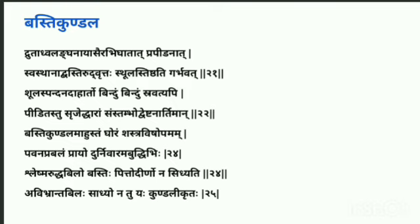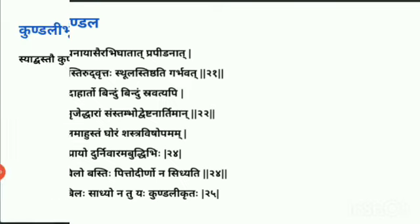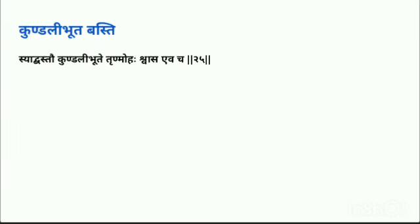When the Basti is in the form of Kundalakara, it will be round or diverticulous in shape. The associated conditions are Trushna (thirst), Moha (confusion), and Shwasa (severe dyspnea). These are the conditions where Kundali Bhuta Vasti is observed.